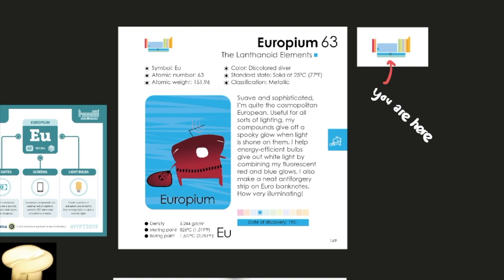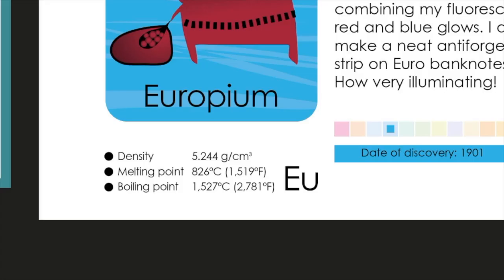Suave and sophisticated, I'm quite the cosmopolitan European. Useful for all sorts of lighting, my compounds give off a spooky glow when light is shown on them. I help energy efficient bulbs give out white light by combining my fluorescent red and blue glows. I also make a neat anti-forgery strip on euro banknotes. How very illuminating.